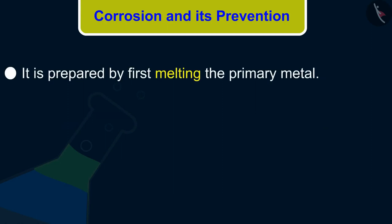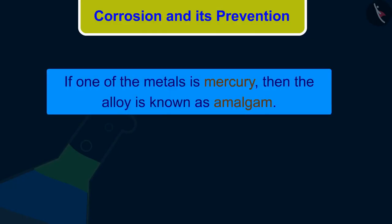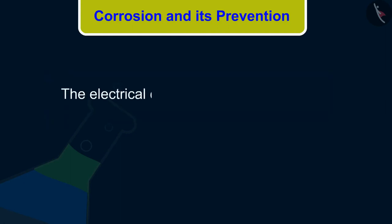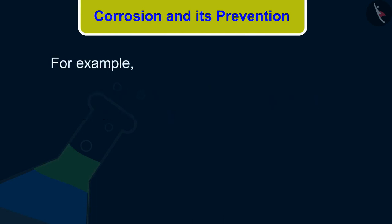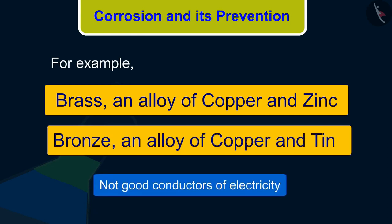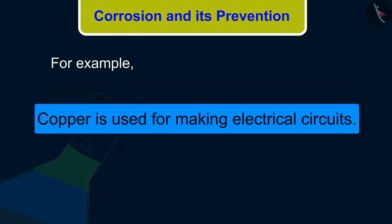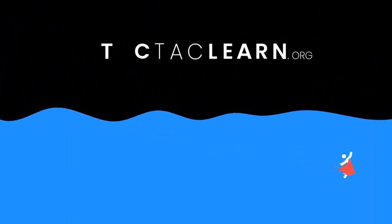It is prepared by first melting the primary metal and then dissolving the other elements in it in definite proportions. It is then cooled to room temperature. If one of the metals is mercury, then the alloy is known as amalgam. The electrical conductivity and melting point of an alloy is less than that of pure metals. For example, brass, an alloy of copper and zinc, and bronze, an alloy of copper and tin, are not good conductors of electricity, whereas copper is used for making electrical circuits. In this video, we studied corrosion and prevention of corrosion.